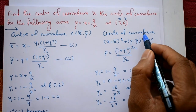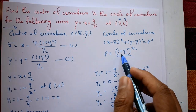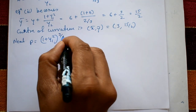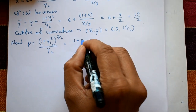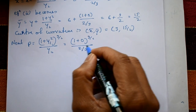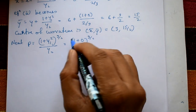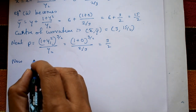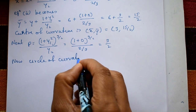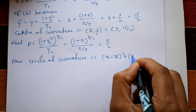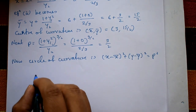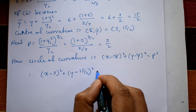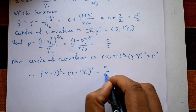Now find ρ for the circle of curvature. ρ = (1 + y1²)^(3/2) / y2 = (1 + 0)^(3/2) / (2/3) = 1 / (2/3) = 3/2. So ρ = 3/2 and ρ² = 9/4. The circle of curvature is: (x − 3)² + (y − 15/2)² = 9/4. This is the required solution.